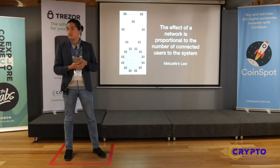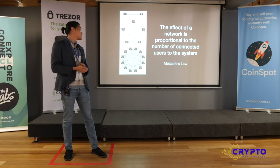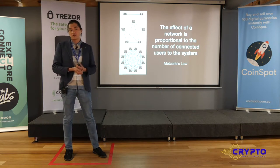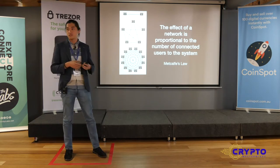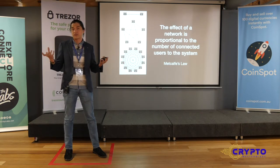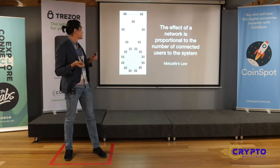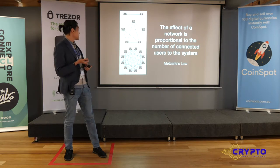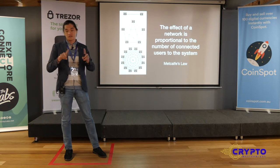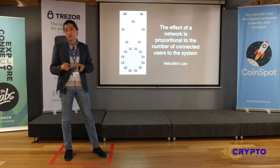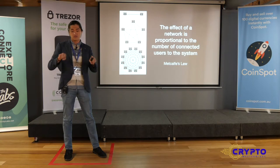There's a guy by the name of Metcalfe. He came up with a law called Metcalfe's Law: the effect of a network is proportional to the number of users connected to the system. A telephone system with only two phones is not very valuable because there's only one connection. If you extend to five phones, the number of connections increases. By the same virtue, a blockchain is only as strong as the number of users using it.